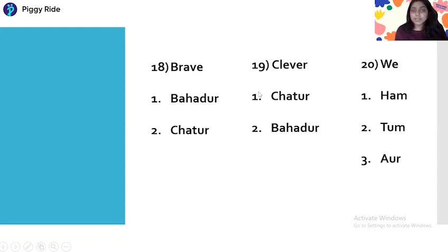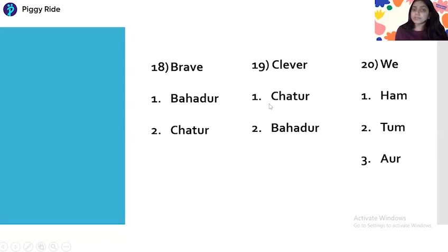Next we have three more words: Brave, Clever, and We. Brave — options are Bahadur and Chatur. Brave means Bahadur. Clever — Clever means Chatur or Bahadur? The correct answer is Chatur. Clever means Chatur.